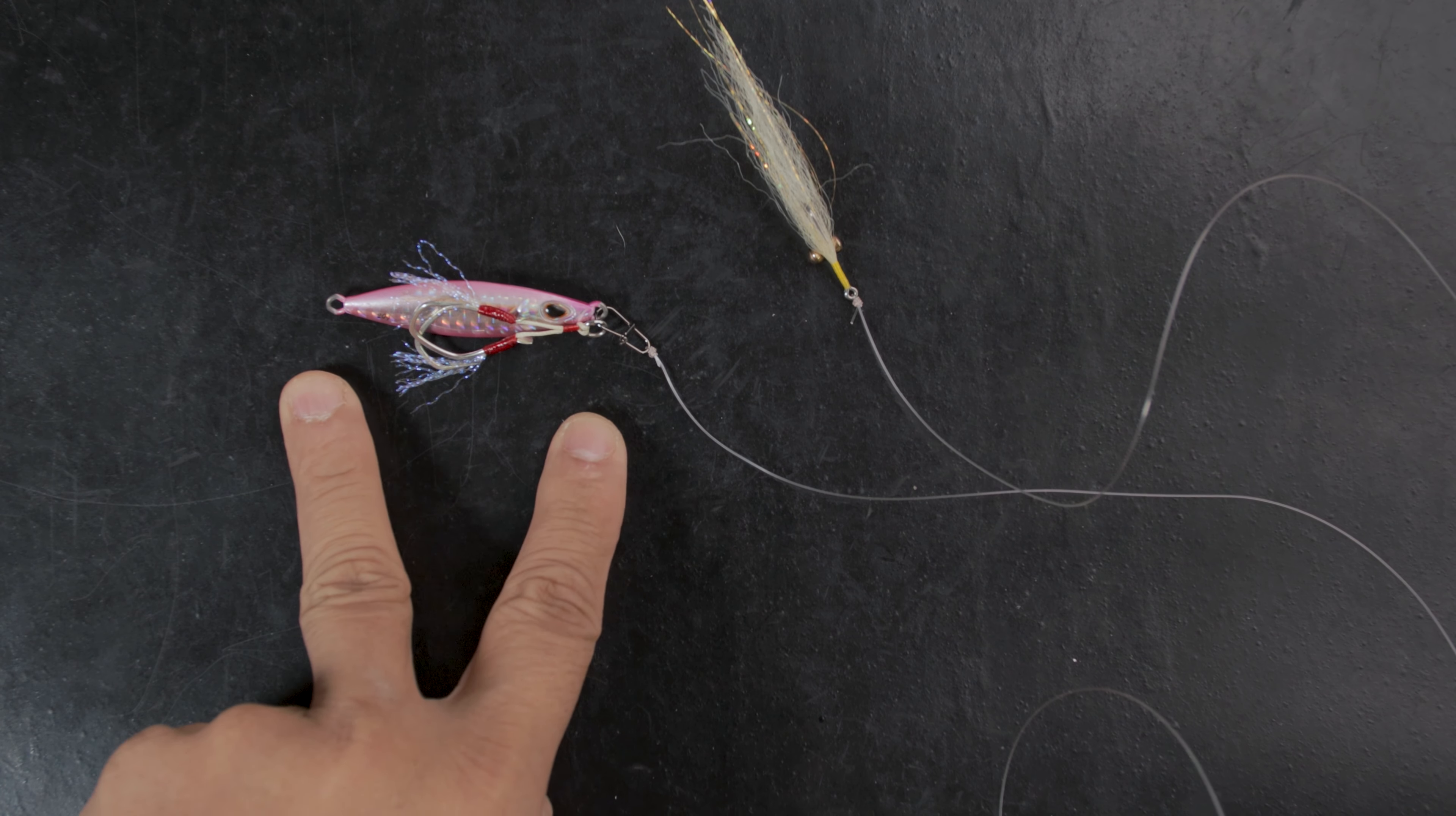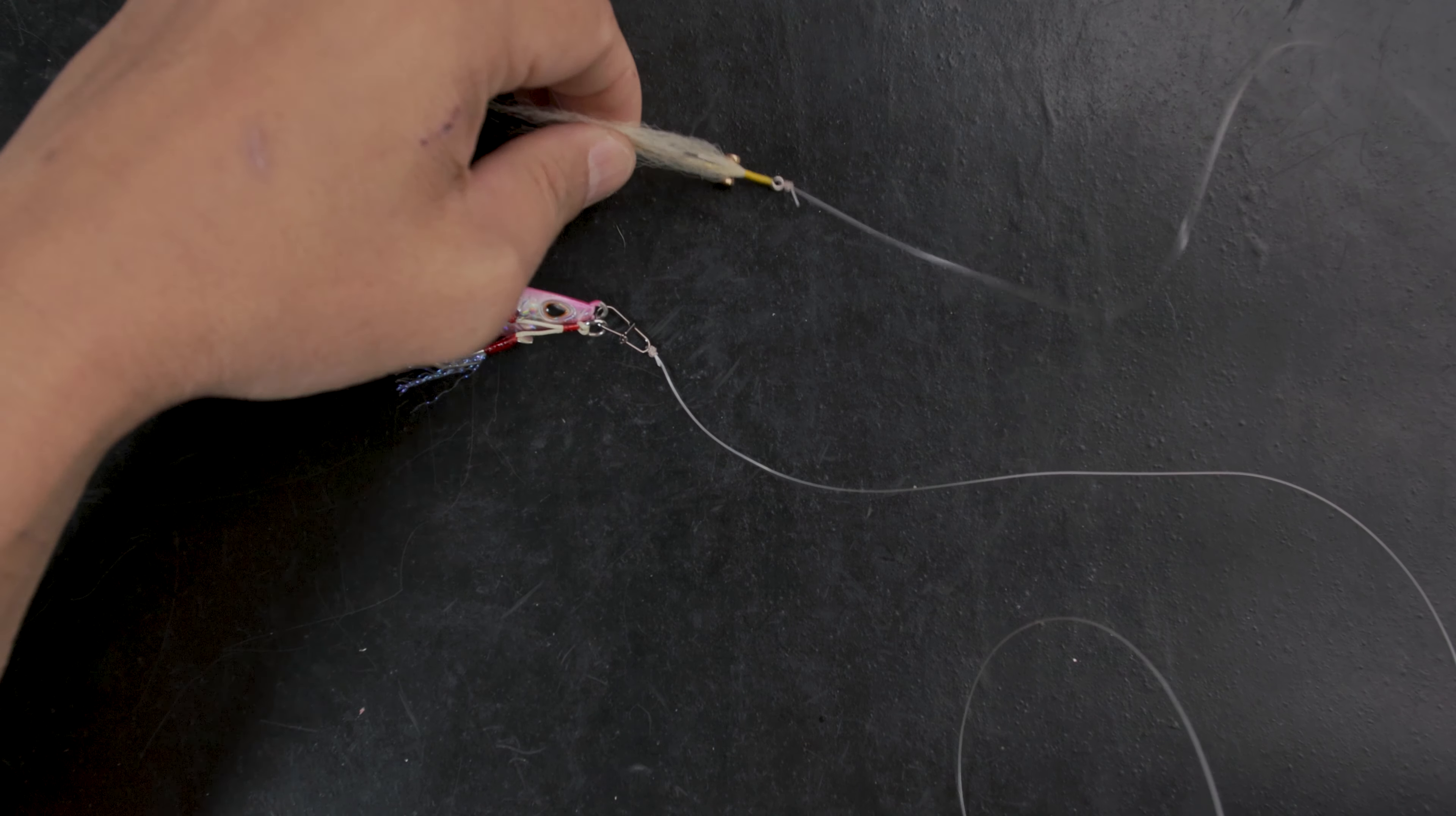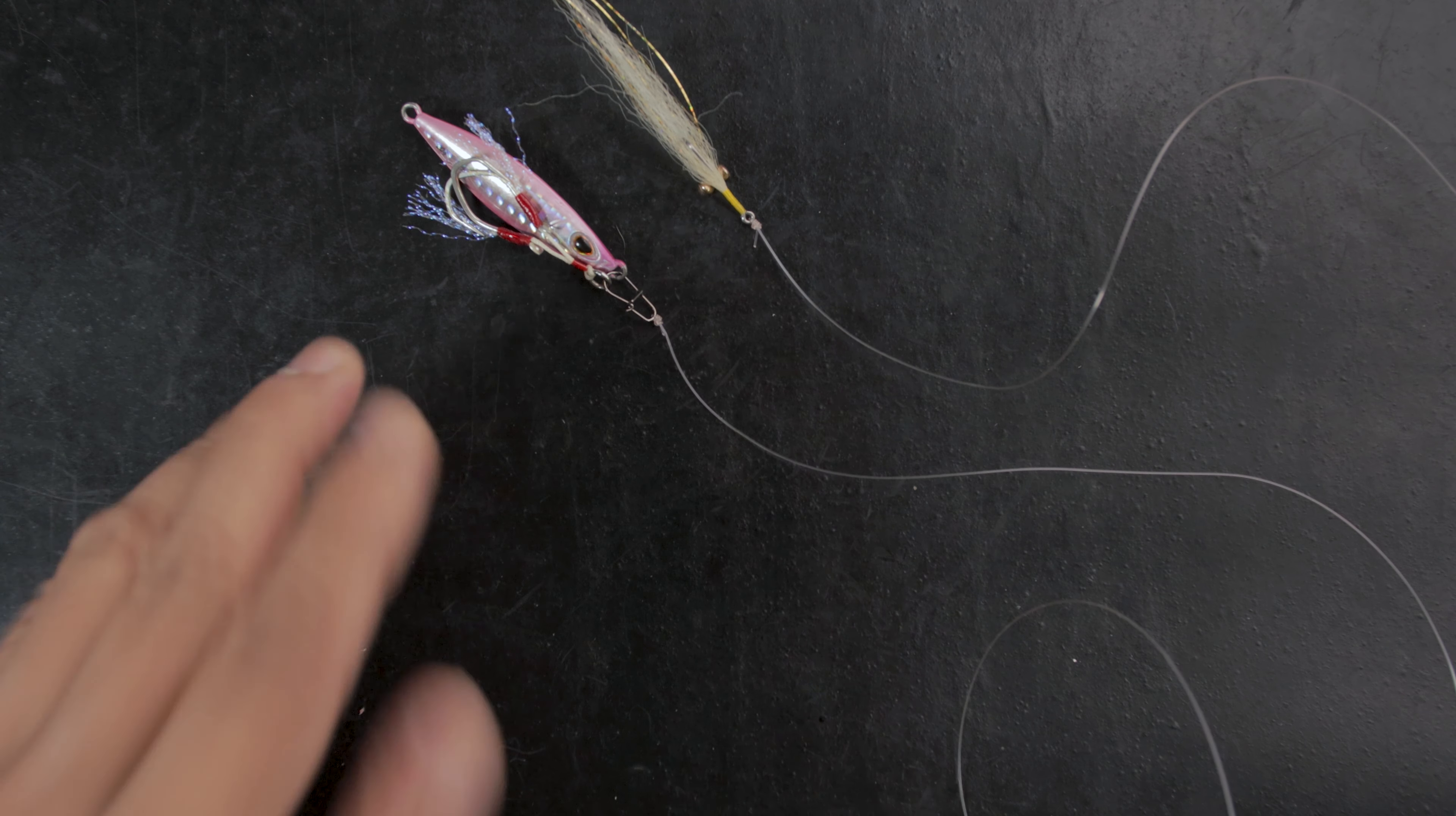And then you'll have your teaser right in front of it and all you have to do is just really crank it in and it swims. It looks as if it's chasing this. Most of the time you actually catch two fish because the jig will attract some predators and then when you catch something on this, it'll attack, or some other would attack the fly.